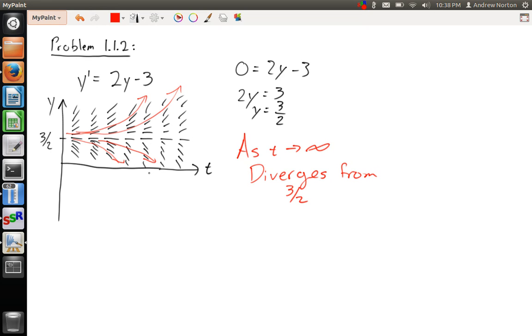So if I'm on this side of 3 halves, it goes to negative infinity. This side of 3 halves, it goes to positive infinity. So that is the solution to problem 2 of chapter 1, section 1, in Boyce and DiPrima.